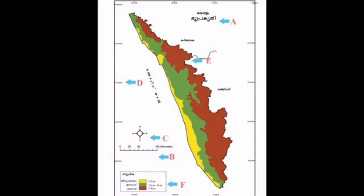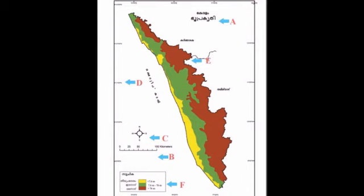A map is A, B, C, D, E, F — and a map has been added. A is a map that is already released.